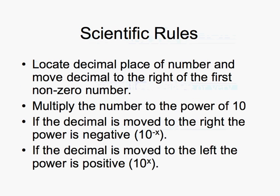Now, in order for us to write a number in scientific notation, the first thing you must do is locate the decimal place of the number and move the decimal place to the right of the first non-zero number. That number is then multiplied by the power of 10. If the decimal is moved to the right, then the power is negative. And if the decimal is moved to the left, the power is positive.